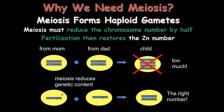For example, if fertilization occurred without meiosis halving the chromosomes — if only mitosis occurred — the mother cell would contribute 46 chromosomes and the father cell would also contribute 46, giving the child 92 chromosomes. That is far too many for the formation of life. That is why meiosis reduces the genetic content by half, so 23 come from the mother and 23 from the father, making the correct number of 46 — or 23 pairs — that makes human life possible.